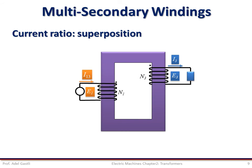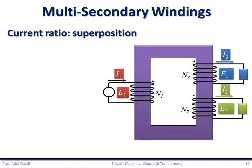Now if we consider secondary winding 3 alone, we can write that the primary current I13 equals the secondary current I3 multiplied by the turns ratio N3/N1. Superimposing the two currents when both secondary windings are used together, and considering the equation for I1 as the sum of I12 and I13, along with the equations relating the primary current components I12 and I13 to the secondary currents I2 and I3, we can obtain the following combined equation.